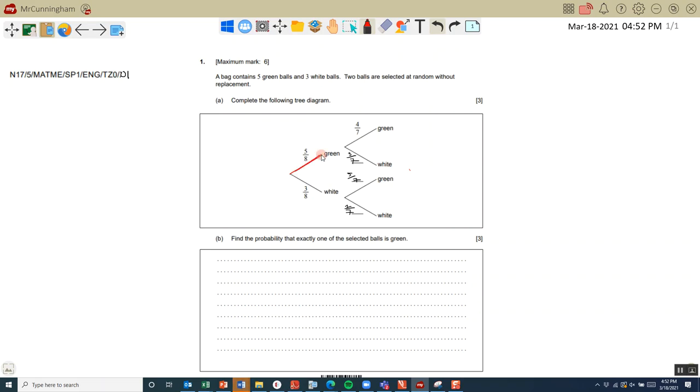Green followed by white. The probability of that happening would be 5/8 multiplied by 3/7, which is 15/56. That's the probability of getting a green and then a white.